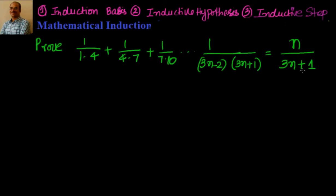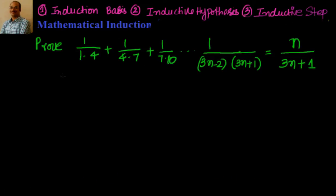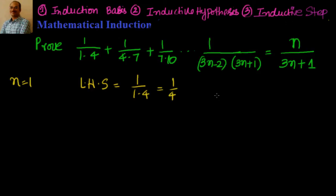To prove this, we follow two steps. First, we prove it's true for n=1. For n=1, LHS equals 1/(1·4) = 1/4. For RHS, substituting n=1: 1/(3·1+1) = 1/4. So LHS equals RHS, and the statement is true for n=1.